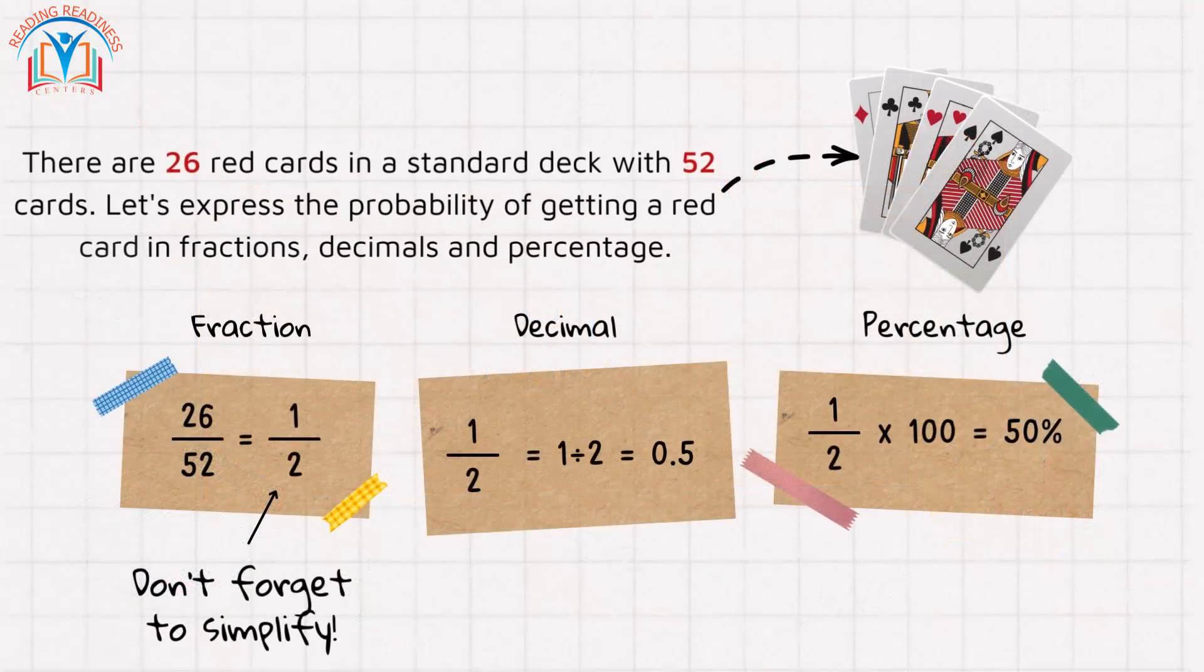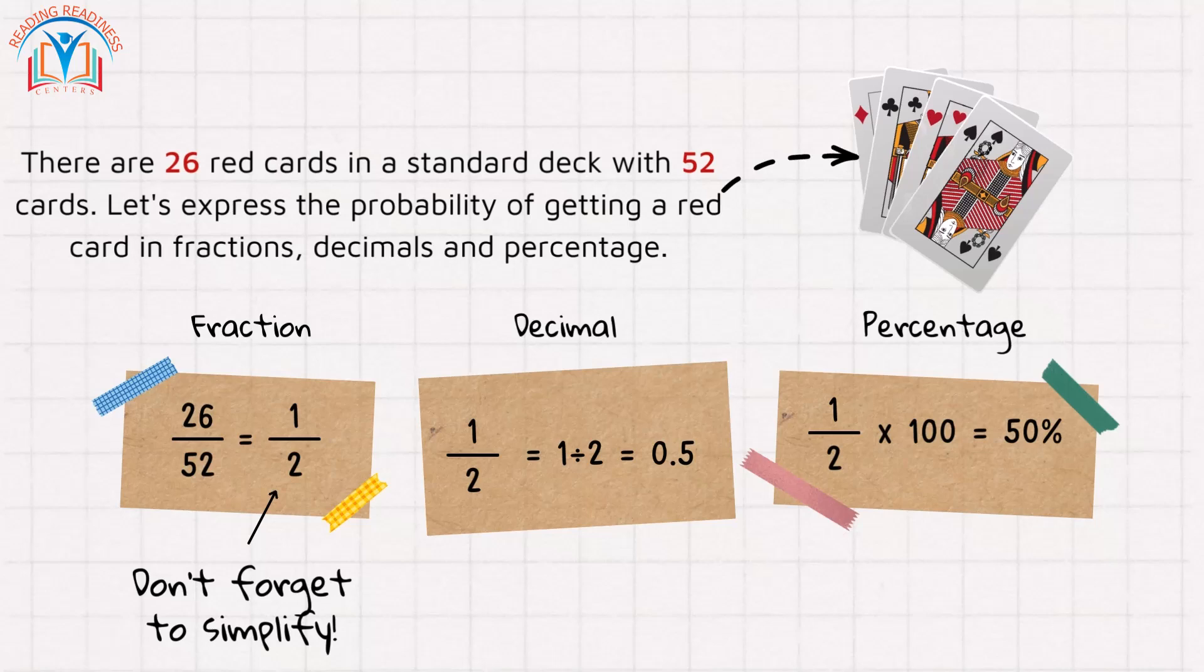Let's try another example. There are 26 red cards in a standard deck of 52 cards. Let's express the probability of getting a red card in fractions, decimals, and percentages. The probability as a fraction is 26/52, which simplifies to 1/2.